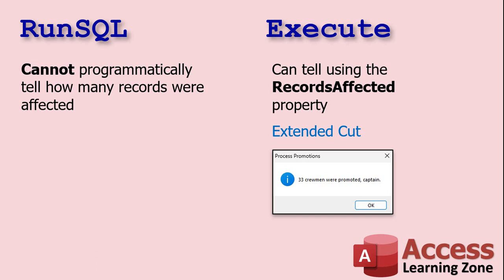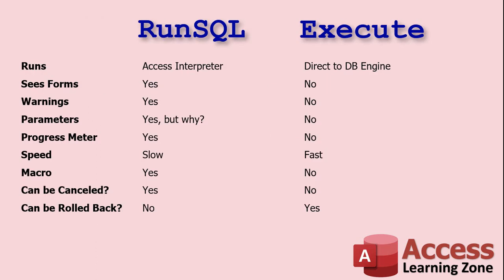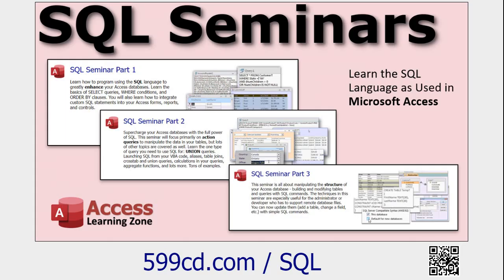In summary: RunSQL runs at the Access interpreter level whereas Execute goes directly to the database engine. RunSQL can see forms; Execute cannot. RunSQL gives warning messages; Execute does not. RunSQL has the option to give you parameters and a progress meter, can be used in macros, and can be canceled — Execute cannot. RunSQL is slower; Execute is faster. And Execute can be rolled back in transactions whereas RunSQL cannot.